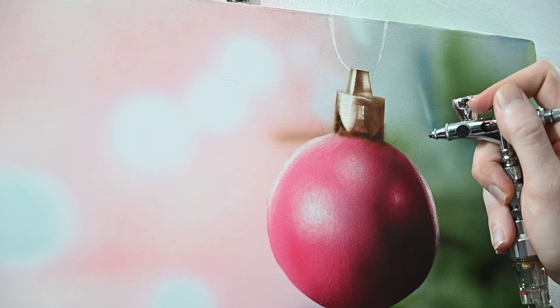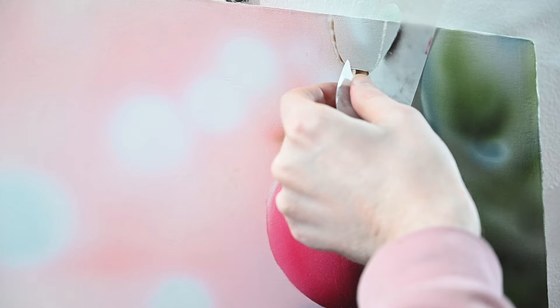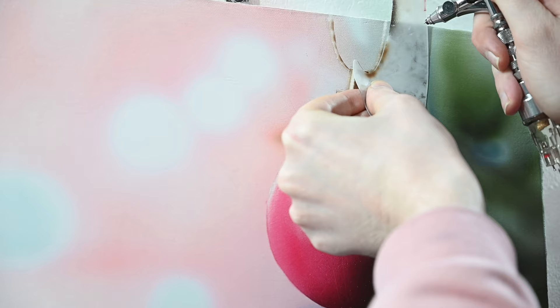I also want to add some small shadows to the lower part of this string, which is connecting the ornament to the tree. So all I'm doing is lining up my shield here, spraying the paint directly on the shield, allowing some of the overspray to get onto that string. So we have a very subtle shadow there. And that's it.